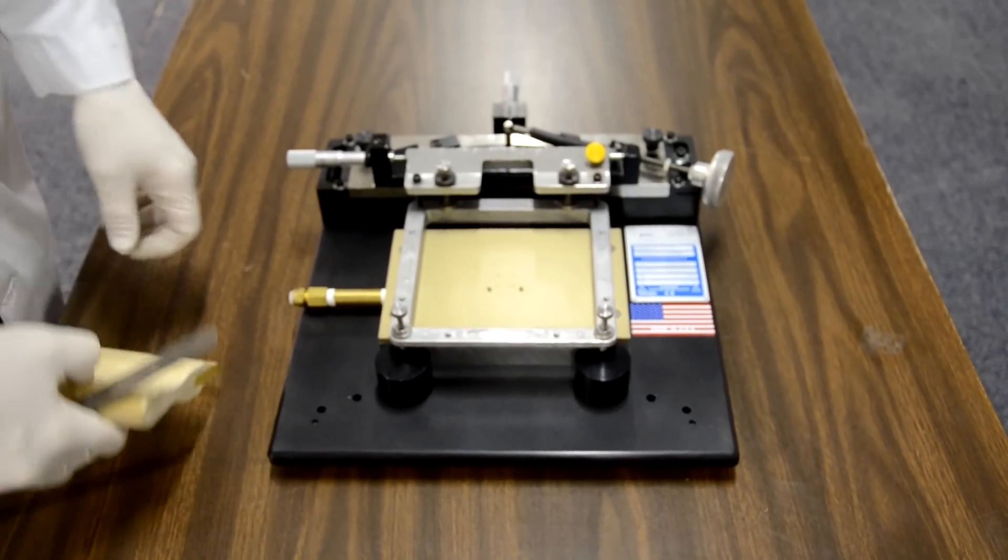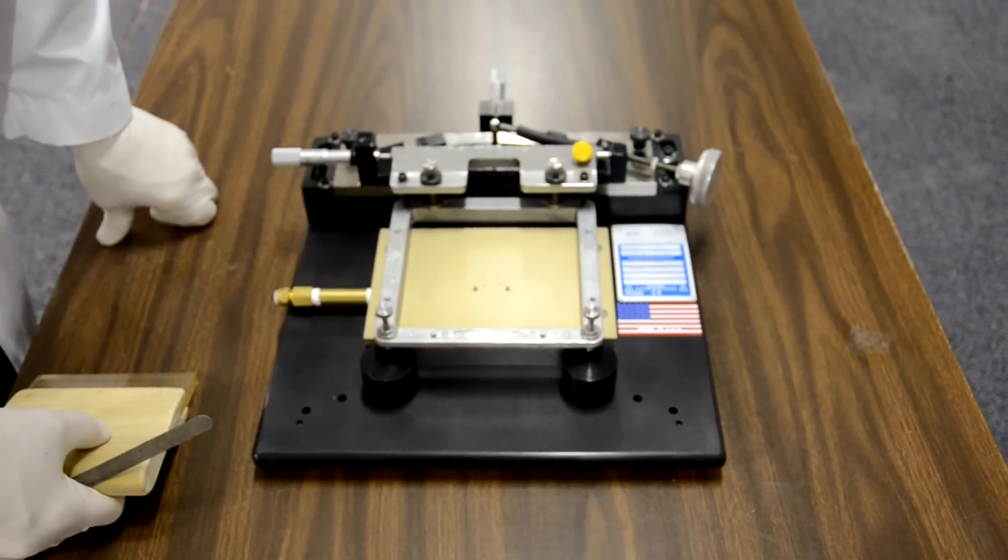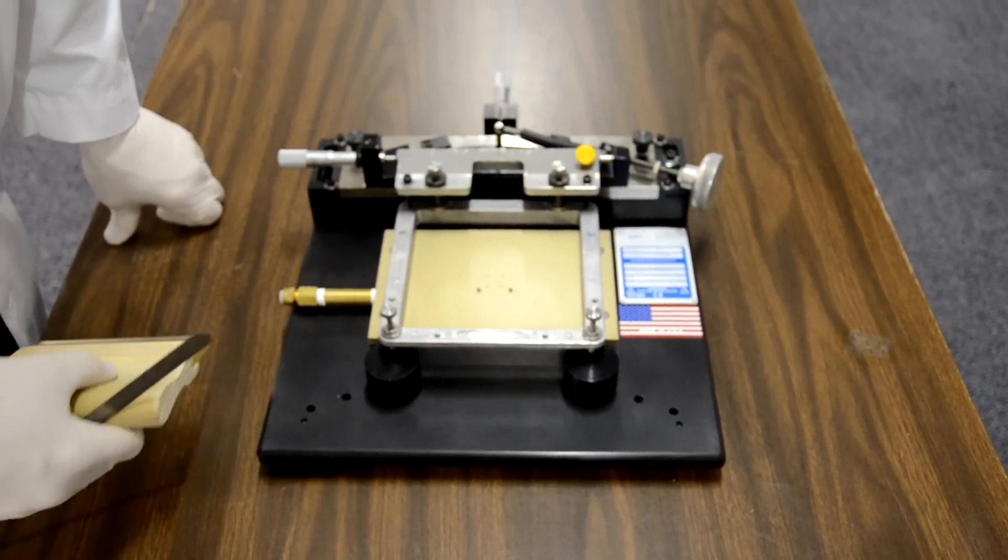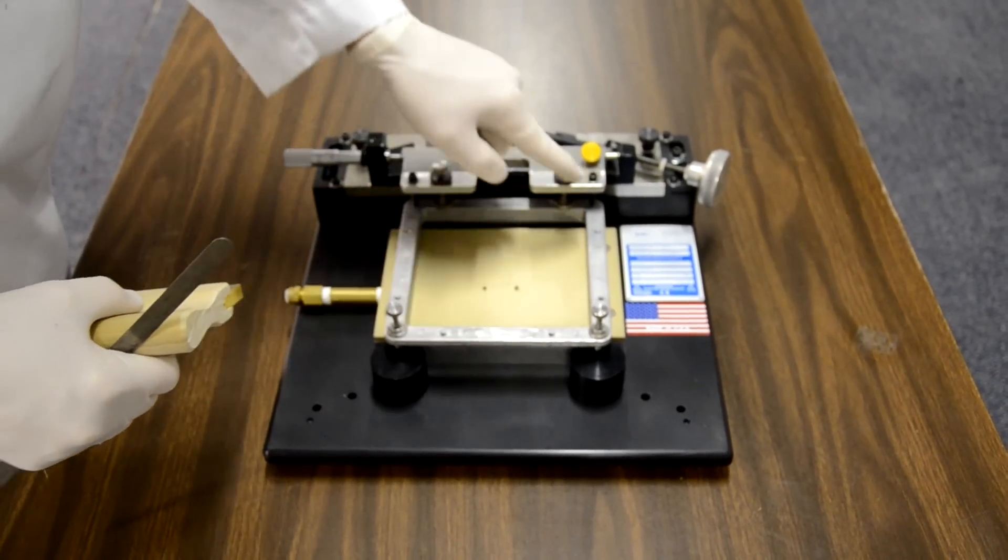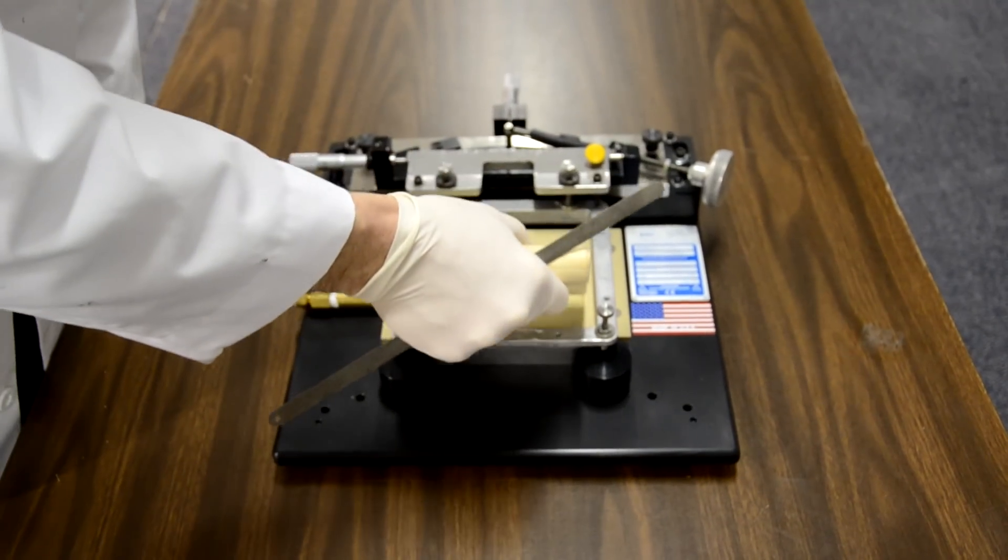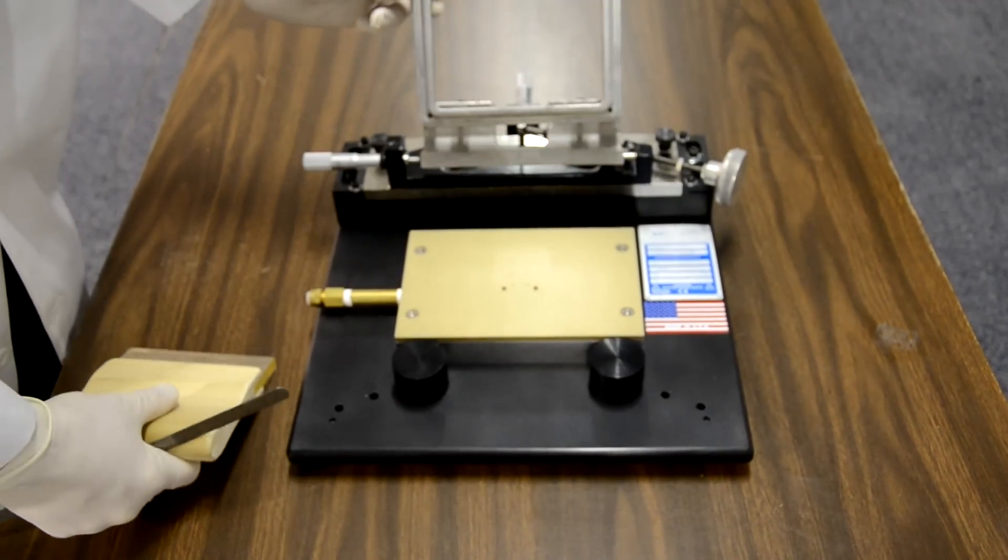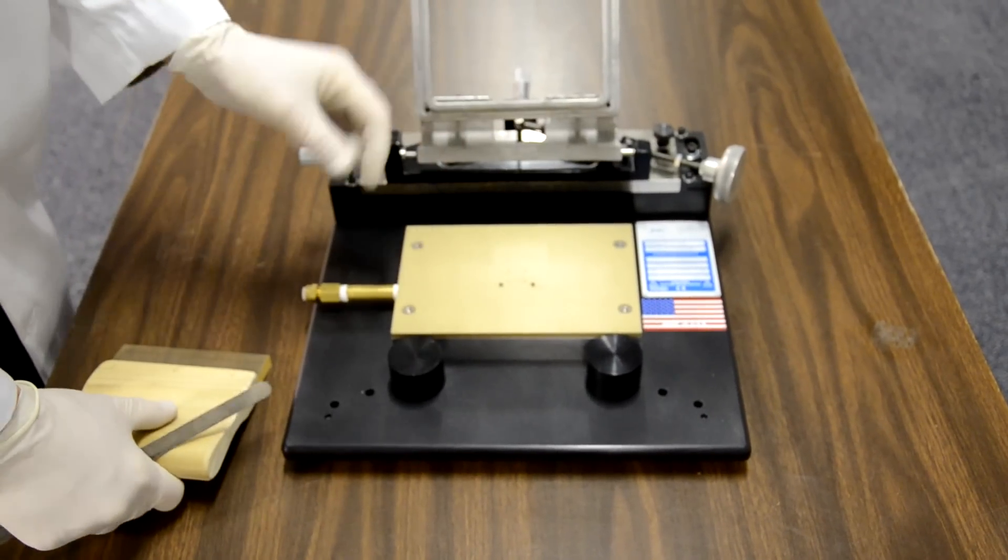Welcome to HMI Screen Printers. This is our smallest model, the manual machine called the HC-53. It's manual because you see the 5-inch screen frame here. You would manually screen print, lift, and take off the substrate.